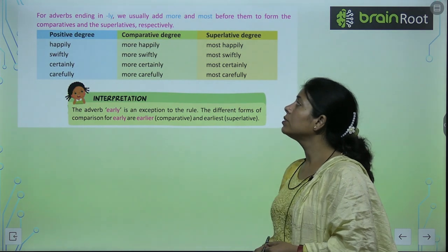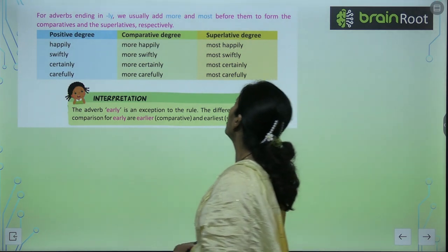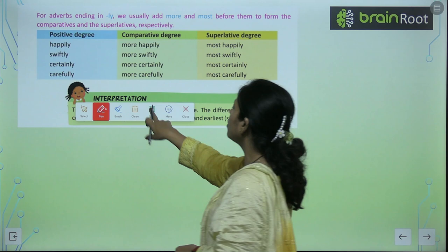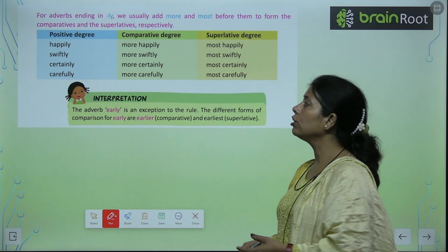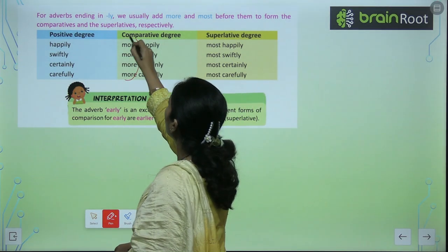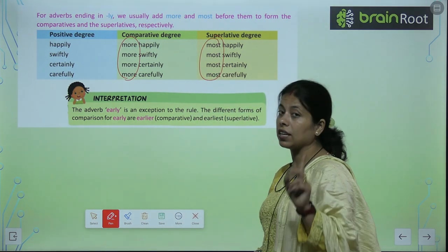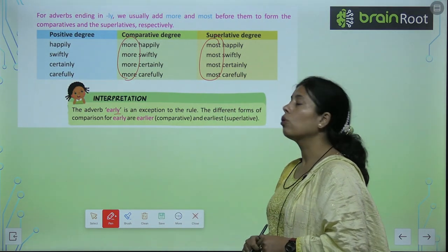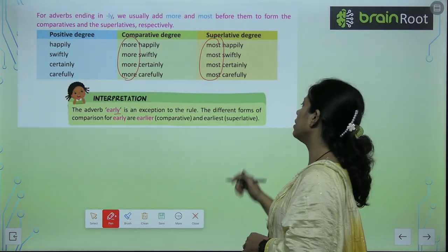For adverbs ending in -ly, we usually add 'more' and 'most' before them to form comparative or superlative degree — like carefully, swiftly, certainly. In comparative we add 'more', in superlative we add 'most'. But early is an exception — it also ends in -ly, but we write earlier and earliest instead of using more and most.